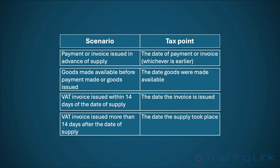With this in mind, which one do we choose? The order in which the tax point is recognised is shown on screen now. We can see that if the payment is made or an invoice created prior to when the goods or services were made available, this would be your actual tax point. If both payment is made and invoice issued before the goods were made available, then the earliest of the payment date and invoice date would be used as the tax point.